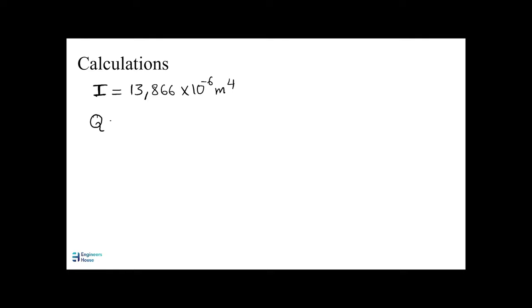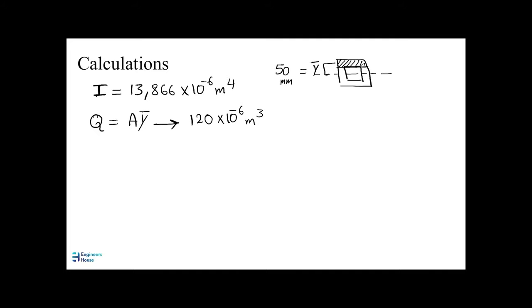Now let's find how much Q is. Using the center line and the required portion, we identify the distance from the centroid of the portion to the center line. We plug in the values — the area of this section and the distance — to obtain Q. Now we can determine the shear flow. We have the shear force, Q, and I. Plugging in the values, the shear flow is obtained, with units of force per unit length.